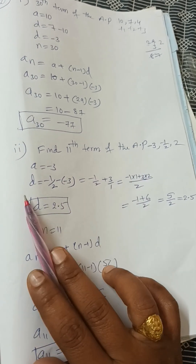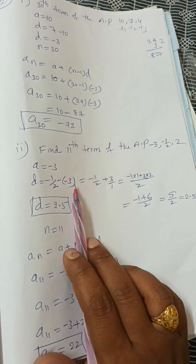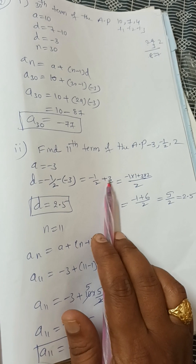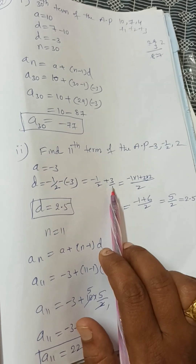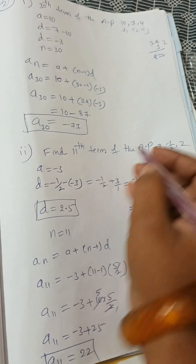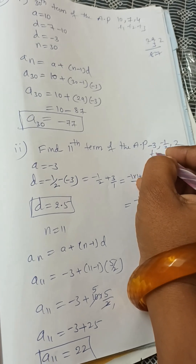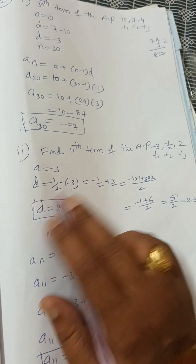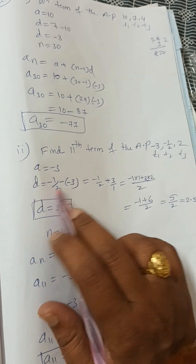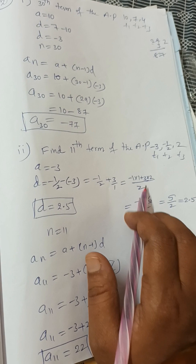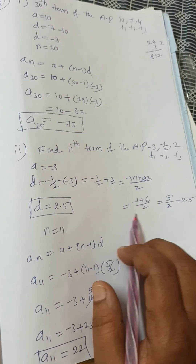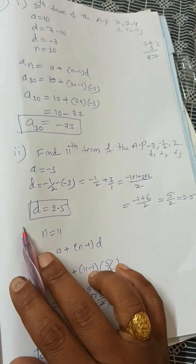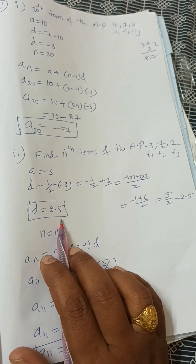For the second part, finding the 11th term: a = −3. The common difference d = t₂ − t₁ = −1/2 − (−3) = −1/2 + 3. Taking LCM, d = 5/2, which is 2.5.